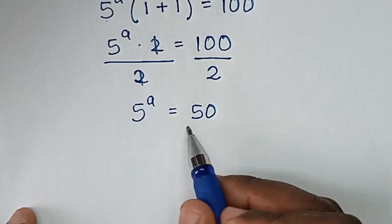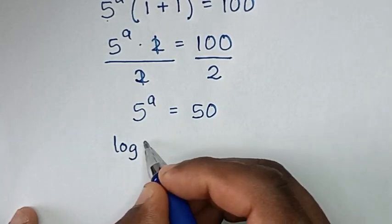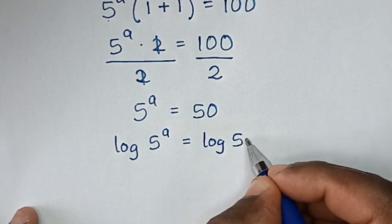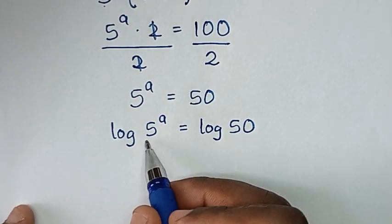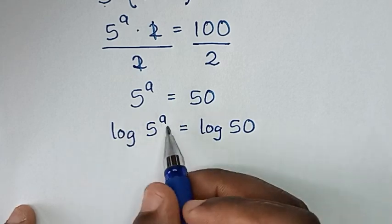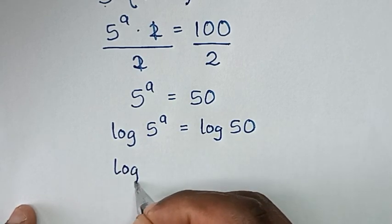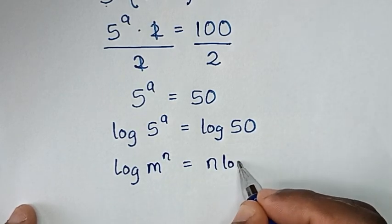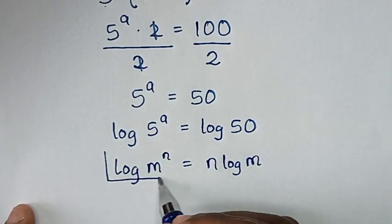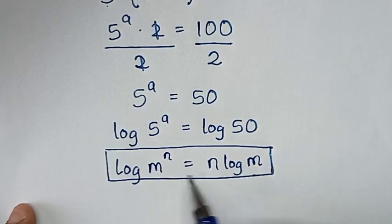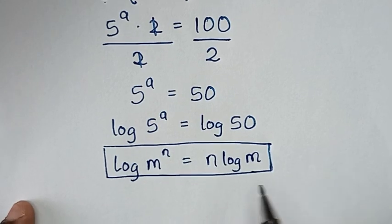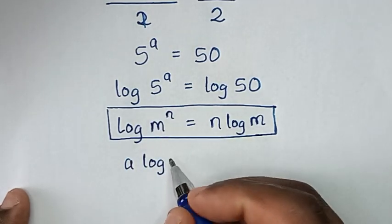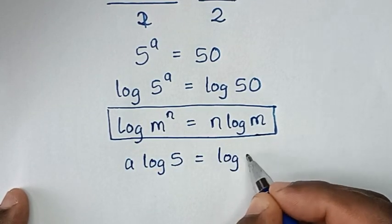In the next step we apply log on both sides, so it will be log of 5 power of a is equal to log of 50. Then log of 5 power of a is in the form of the logarithmic rule: log of m power of n is equal to n times log of m. So the power of a moves to the front, giving a times log of 5 is equal to log of 50.